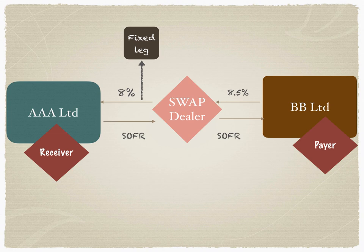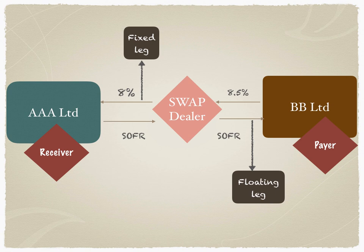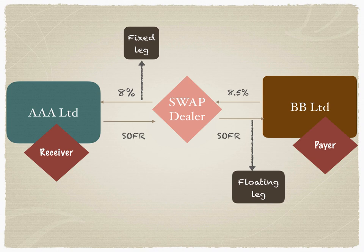Who is paying the fixed interest rate? BB Limited — therefore BB Limited is called the payer. Who is receiving the fixed interest rate? AAA Limited — therefore AAA Limited is the receiver of the fixed interest rate. The floating interest rate exchanged on the basis of SOFR is called the floating leg. The role of the swap dealer is clear: first, to bring these two counterparties together to conclude the swap; and second, to ensure that the quarterly or semi-annual payment of cash flows takes place on the scheduled dates, calculating all payments between the two counterparties.